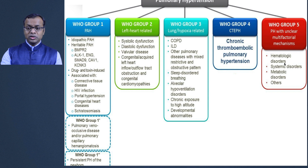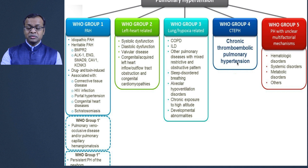Amongst all these groups, Group 4 is very important because it is a treatable cause of pulmonary hypertension where we can actually do wonders in the management of these patients.